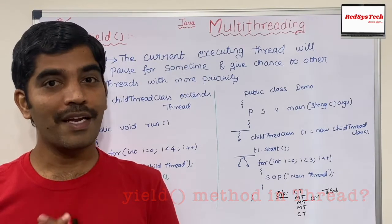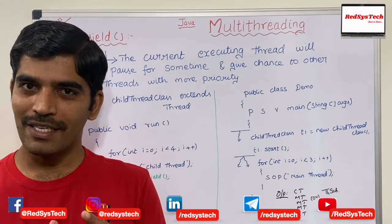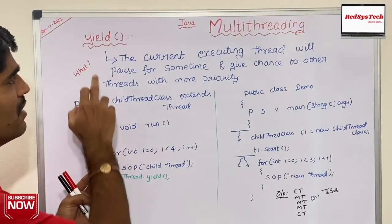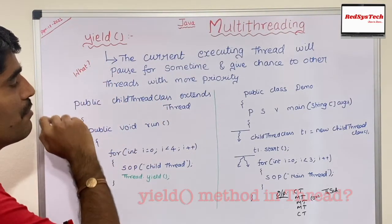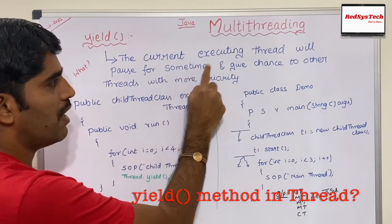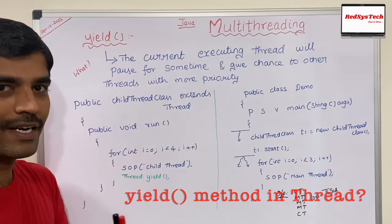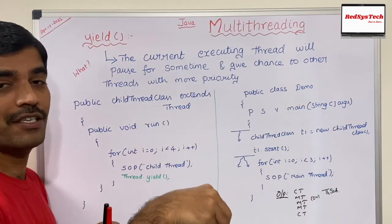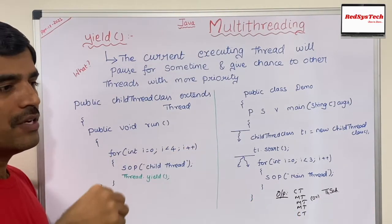If someone is waiting, they should give that person a chance and then come back in the same line. That's the real-time example. Now in threading terms: the person talking to the cashier is thread T1, and you standing behind are thread T2. T1 has to keep checking the line — if any thread is waiting with more priority, T1 has to give that thread a chance.